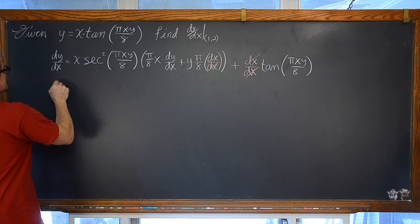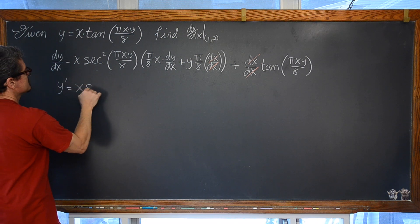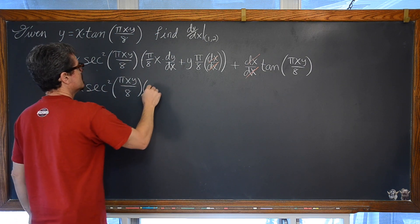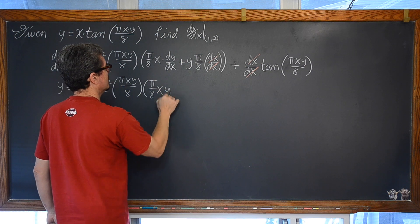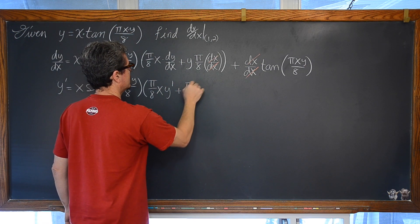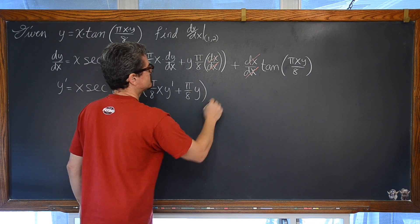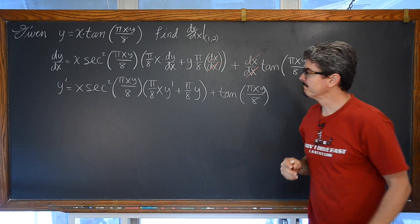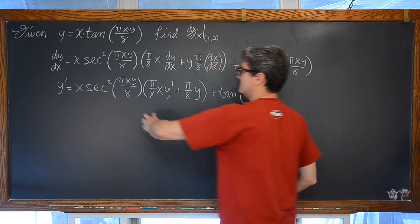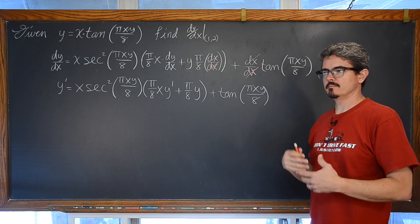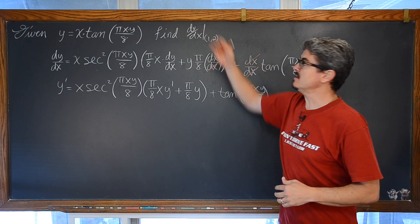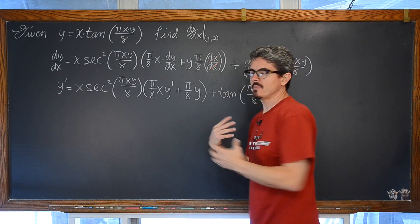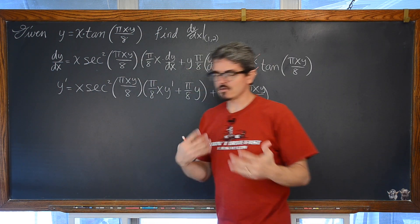Ok, so what we are looking at basically is y prime is equal to x·secant squared of (pi·xy over 8) times (pi over 8·x)·y prime, plus pi over 8·y, plus the tangent of (pi·x)·secant squared of pi over 8. Now, if I was asked to find dy/dx or y prime by itself, we would distribute through the parentheses and do some algebraic manipulation until we have y prime isolated.